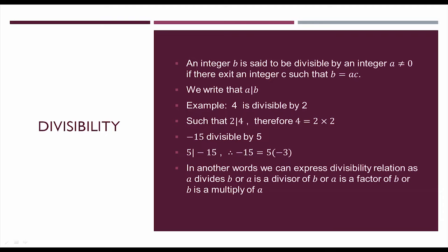We denote this as 'a divides b'. For example, 4 is divisible by 2, or 2 divides 4, because 4 = 2×2 — here a=2, b=4, c=2. Even -15 is divisible by 5: 5 divides -15 because c = -3, which is an integer, and -15 = 5×(-3).